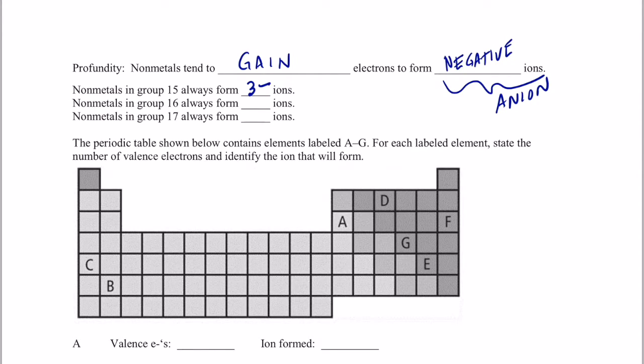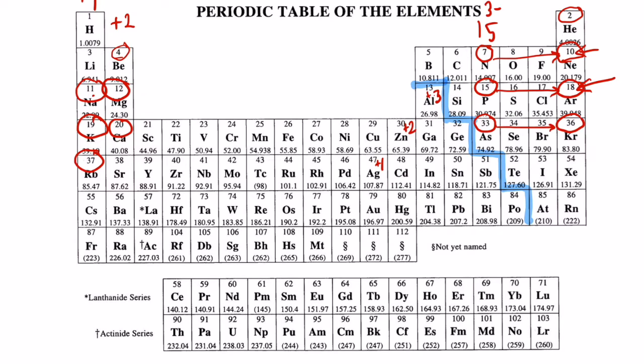Members of group 16 always form two negative charged ions. So we can see oxygen with eight electrons gains two to become like neon and it would be a negative two charge. Sulfur gains two to become like argon. It's also negative two. Selenium gains two to become like krypton. It's negative two. So members of group 16 always form two negative ions.